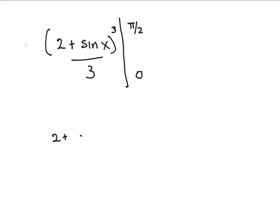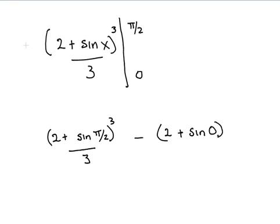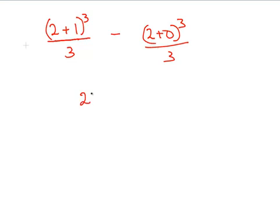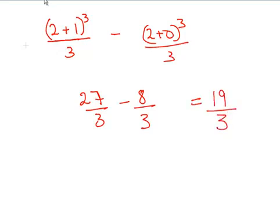That is (2 plus sin(π/2)) cubed all over 3 minus (2 plus sin(0)) cubed all over 3. Sin of 0 is just 0, sin of π/2 is 1. So what we have here is (2 plus 1) cubed all over 3 minus (2 plus 0) cubed over 3. That is 27 over 3 minus 8 over 3, which equals 19 over 3. So the answer is 19/3.